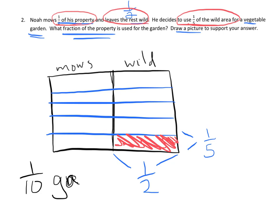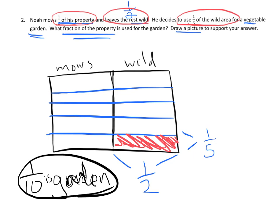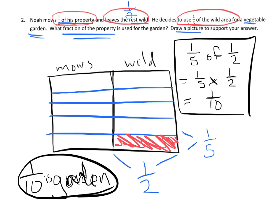One-tenth is used for the garden. If we want to make this look mathematical, we write: one-fifth of one-half equals one-fifth times one-half, and our answer is one-tenth. That's how it would look in proper math terms, but drawing a picture and finding the answer using logic is totally appropriate at this point.